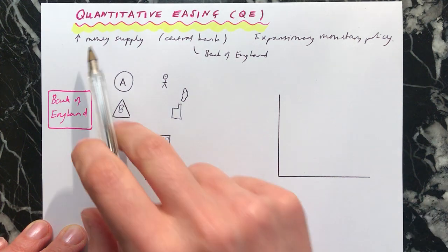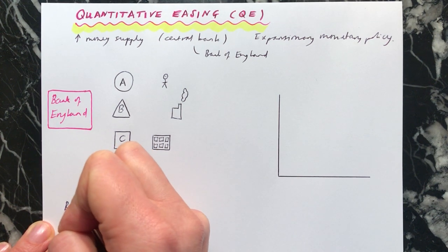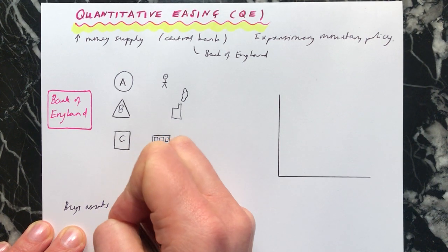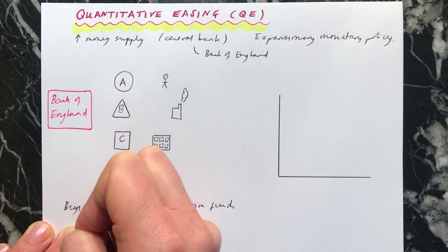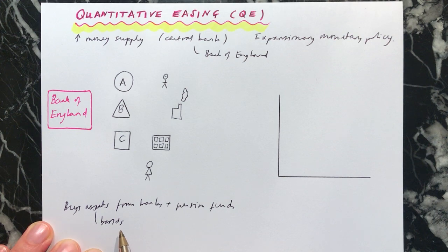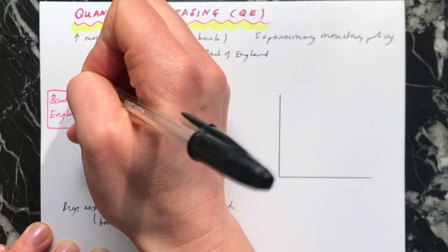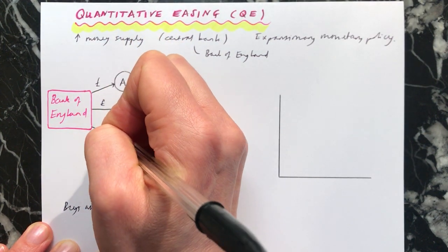So the way that quantitative easing works — how do they get more money into the system? What happens is that the Bank of England, which is our central bank, buys assets from banks and from pension funds. When I say assets, I mean generally bonds. They're buying bonds from these financial institutions — so banks or pension funds. And when they buy the bonds, they have to pay for them. So money, which has been newly created by the Bank of England, is paid into the banks and the pension funds.